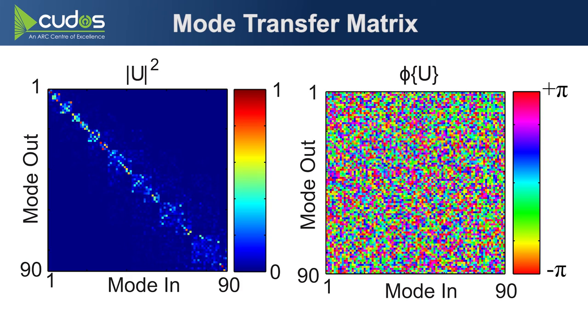Here's an example of a mode transfer matrix for a 50 micron core graded index multimode fiber at 1550 nanometers. In theory, it supports 110 modes, 55 modes per polarization. In practice, the highest order mode group is cut off. So you actually end up with only 90 modes, 45 spatial modes per polarization. It's two meter long fiber in this case.